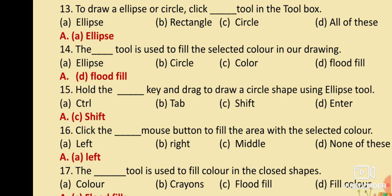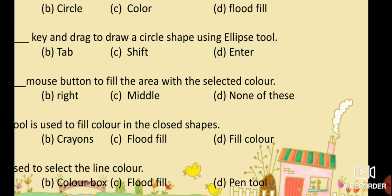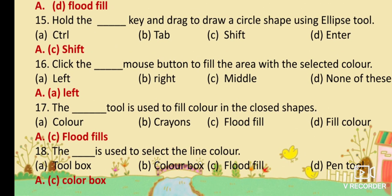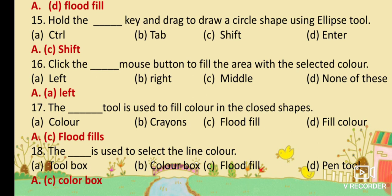MCQ No. 17: The dash tool is used to fill color in the closed shape. Option A: Color. Option B: Crayons. Option C: Flood Fill. Option D: Fill Color. Your answer is Option C: Flood Fill. The flood fill tool is used to fill color in the closed shape.